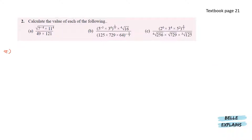Changing this to the required form, we have 7 to the power of negative 4 times 11 to the power of 4, and all of this is to the power of 1 over 2 — since this is a square root — divided by 49 times 121.